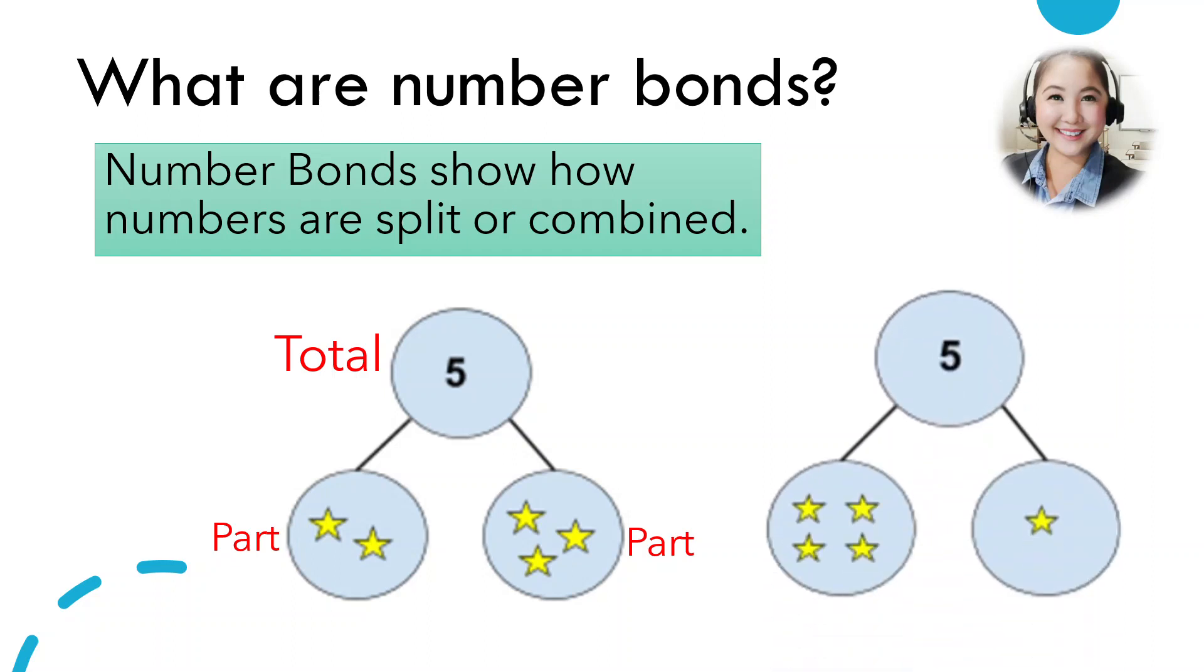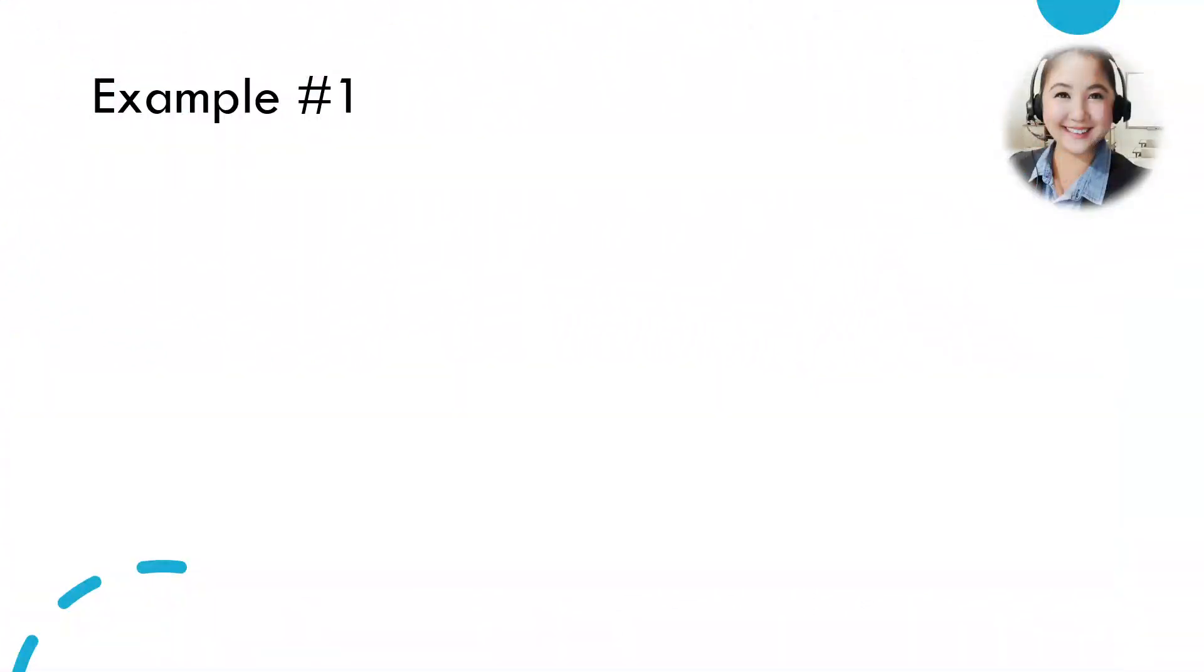Alright, so there we can have four and one. Can we also have five and zero? Yes, because zero is still a number. Great job!